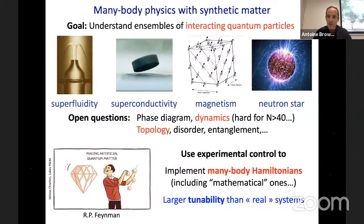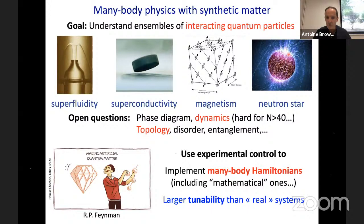Prompted by Richard Feynman's suggestion, people have proposed using experimental control to build artificial quantum matter — implementing many-body Hamiltonians that may idealize real-life situations or be purely abstract. Much like a chemist builds and studies their own product, in AMO physics we can now design our own many-body systems and study them. The great advantage of this approach is very large tunability — far beyond any real system. You can vary the interaction strength and interparticle distance in ways that are simply out of the question for a neutron star.